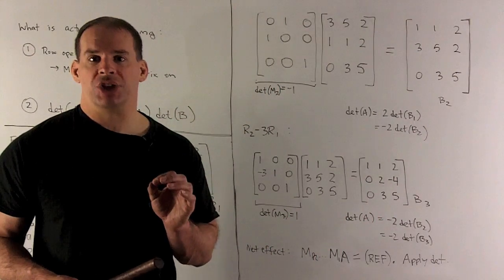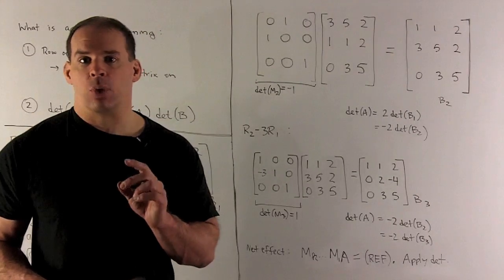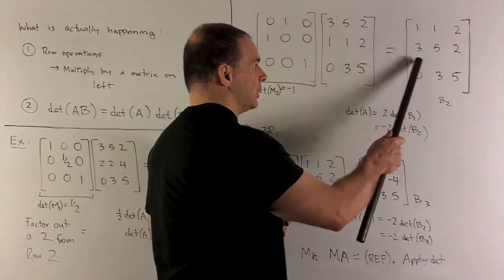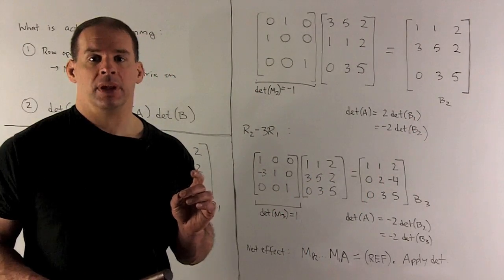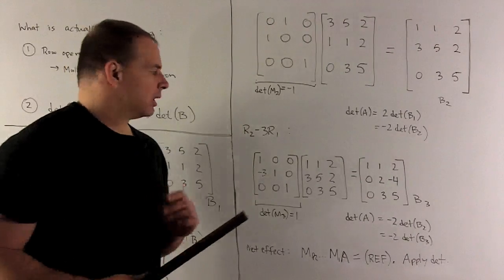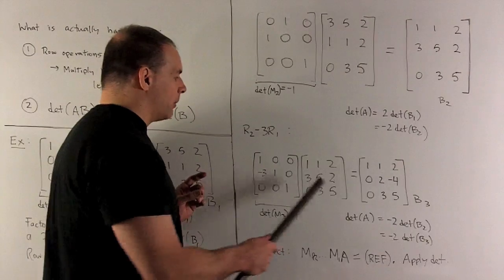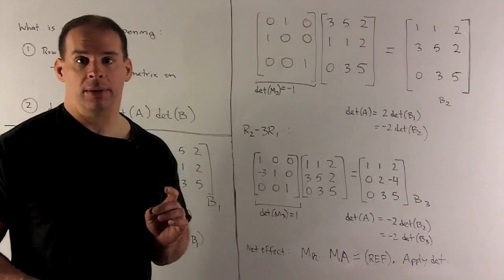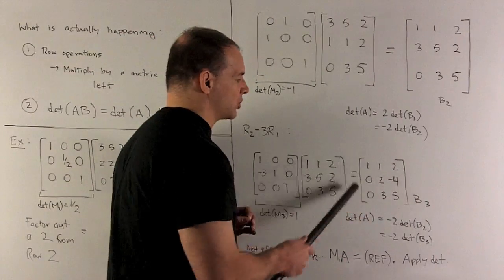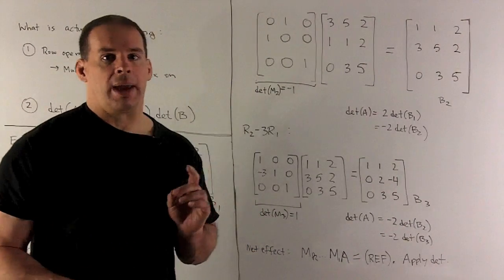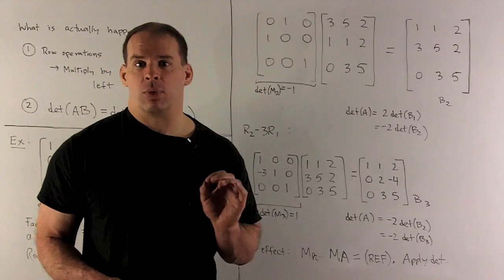The final operation is adding a multiple of a row to another row. For row echelon form, we want to turn the 3 into a 0, so we take row 2 and subtract off 3 times row 1. The matrix that implements that looks like this — you should check that. Taking determinants, the determinant of that matrix equals 1, so det(B2) equals det(B3). You can figure out the rest if going all the way to row echelon form.